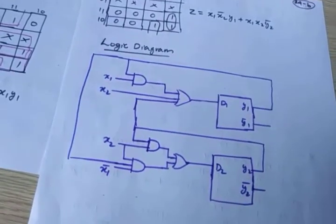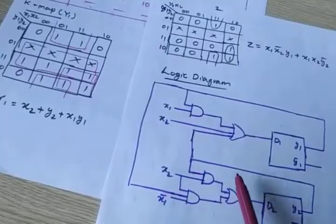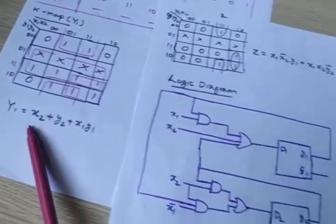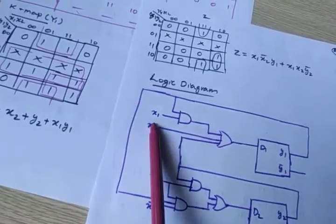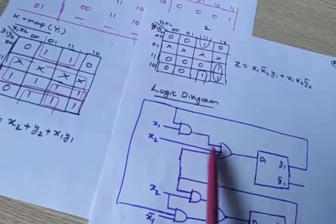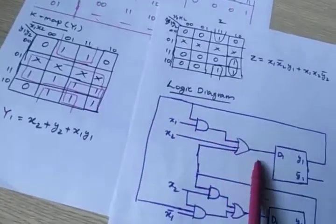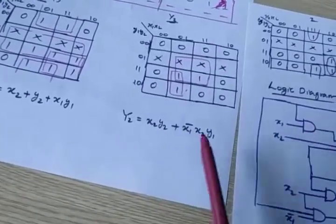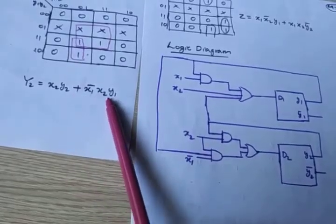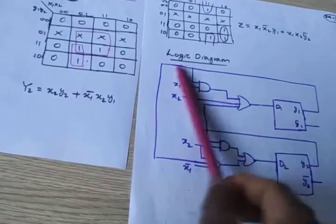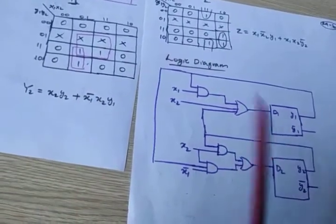With these three equations you can draw the logic diagram using D flip-flops. D1 corresponds to Y1: inputs X2, Y2, and X1·Y1 are OR'd together to give D1. D2 corresponds to Y2: X2·Y2 is AND'd, then OR'd with X1̄·X2·Y1 to give D2. The output Z is implemented from its equation. This gives the complete logic diagram for the asynchronous sequential network.